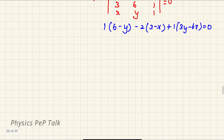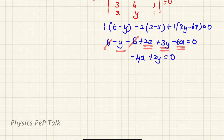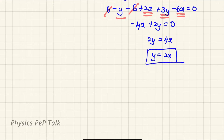So substituting the values: 1 into (6·1 − y·1) minus 2 into (3·1 − x·1) plus 1 into (3y − 6x) should equal 0. So: 1 into (6 − y) minus 2 into (3 − x) plus (3y − 6x) equals 0. This gives minus 6x plus 2x = minus 4x, and plus 3y minus y = plus 2y, equal to 0. So 2y equals 4x. Dividing the whole equation by 2 gives y equals 2x. And this is the required equation of the line: y minus 2x equals 0.